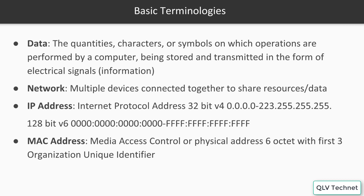A network is multiple devices connected together to share resources or data. A great example of a network is the internet. The internet is made of many devices connected together to share data.